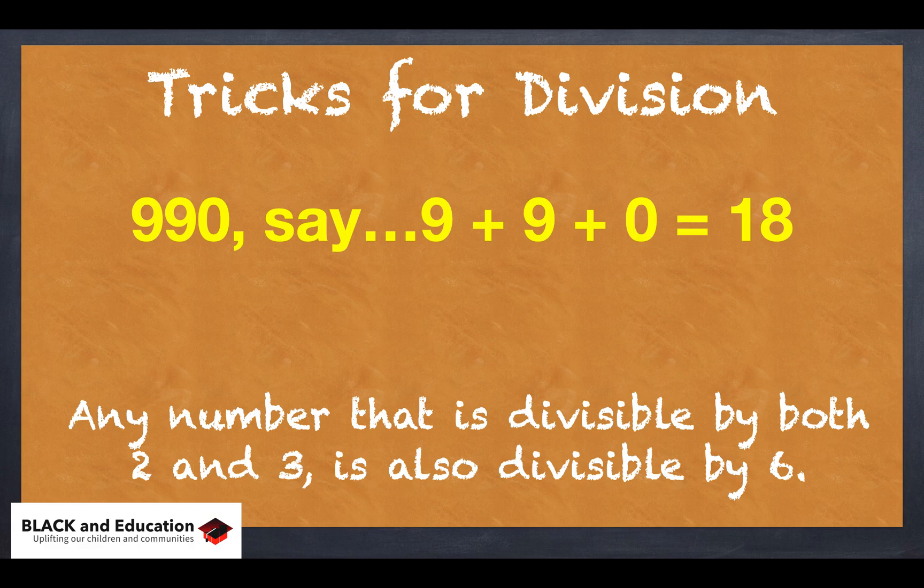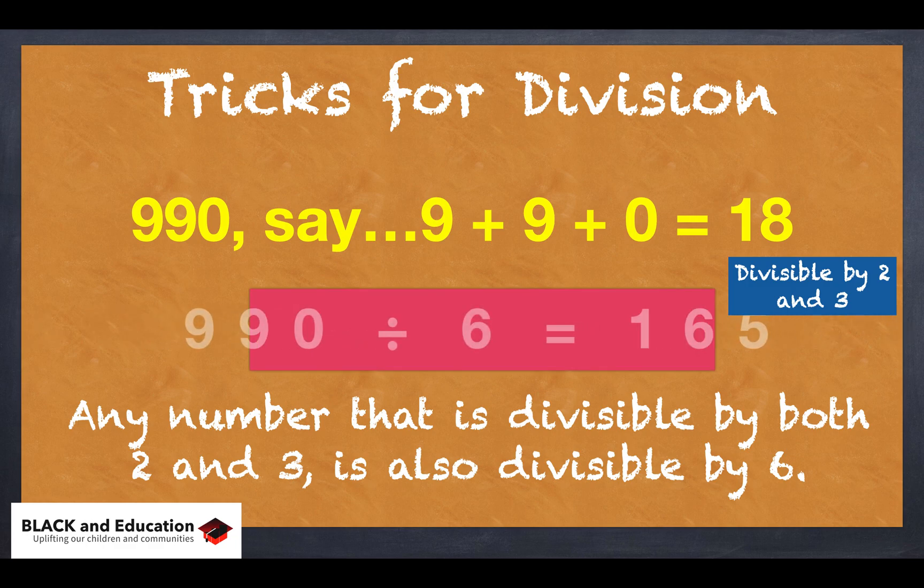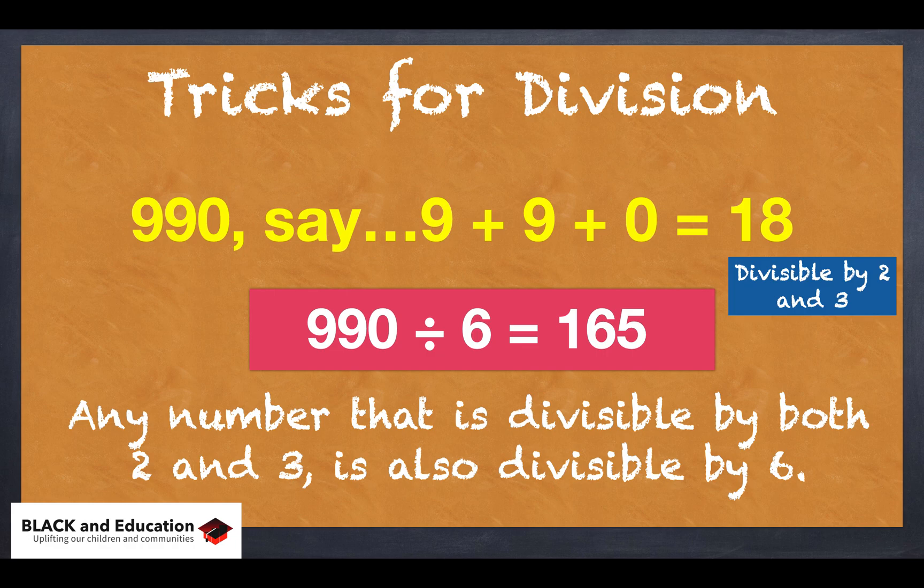and 18 is divisible by 3. So 990 is divisible by both 2 and 3, which means 990 should also be divisible by 6. And if you take a look, it actually is. 6 will go into 990 165 times without any leftovers or remainders.